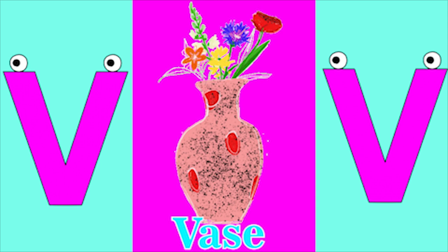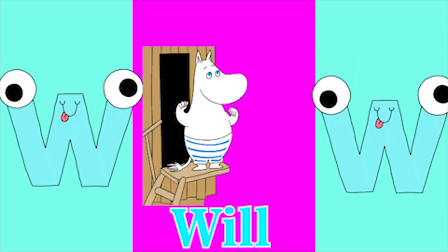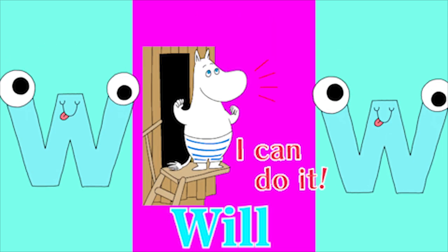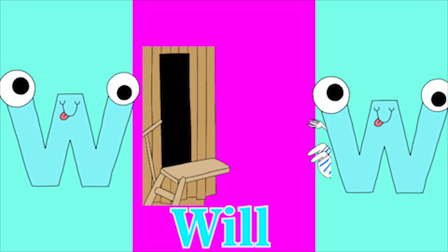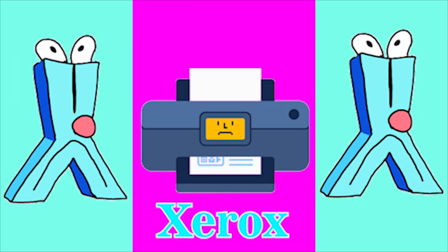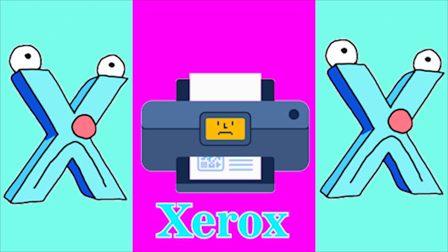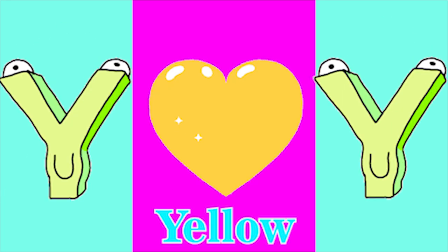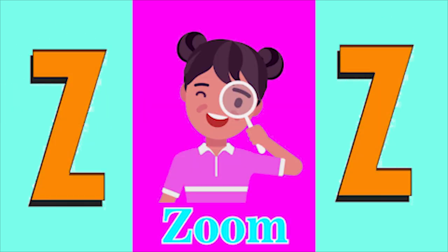V for vase, W for whale, X for zero, Y for yellow, Z for zoo.